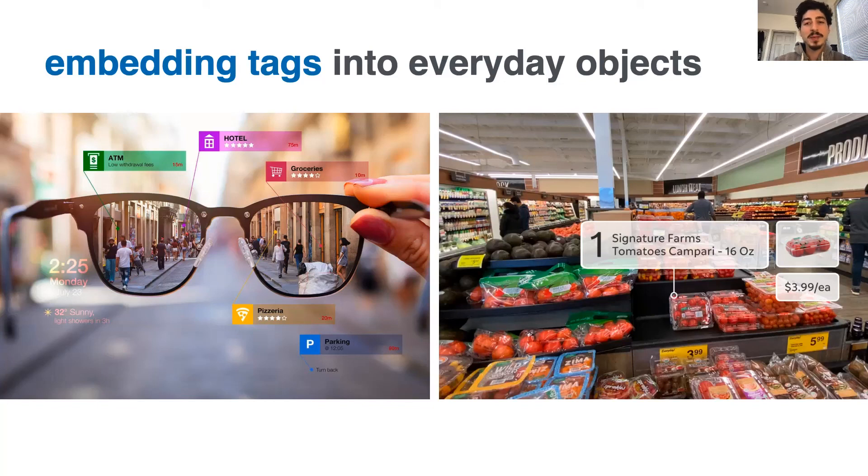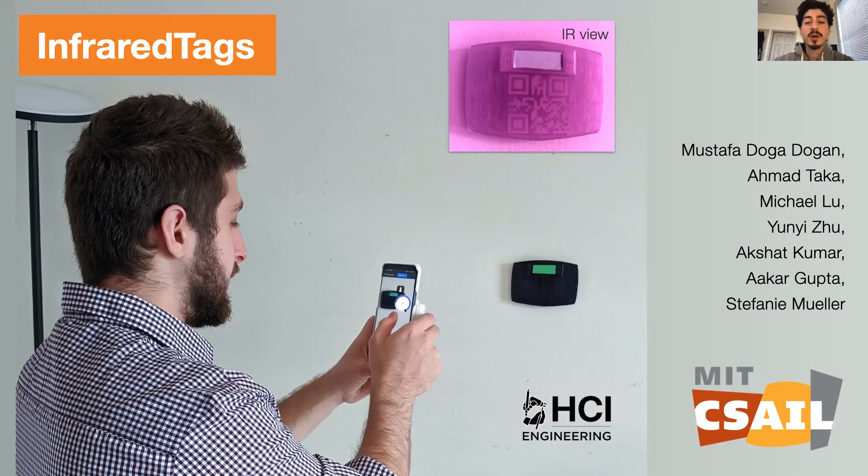Let's conclude. At the beginning, I told you about my vision of embedding unobtrusive tags into everyday objects. With infrared tags, we create markers that are invisible and that can be detected using low-cost tools. Thank you so much for your interest.